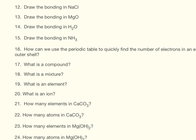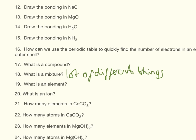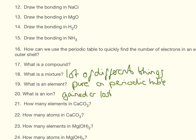A mixture is lots of different things, not bonded together. An element is something that's going to be pure, that's going to be on the periodic table. An ion is something that has either gained or lost electrons, so it's going to have a positive or a negative charge.